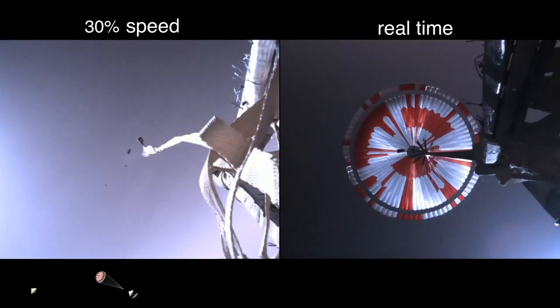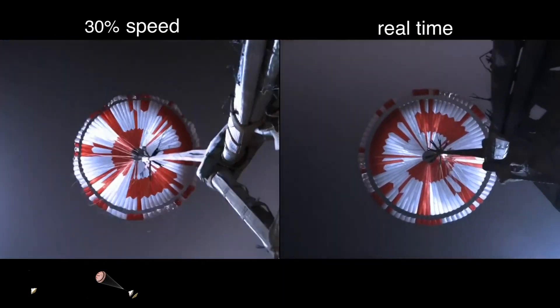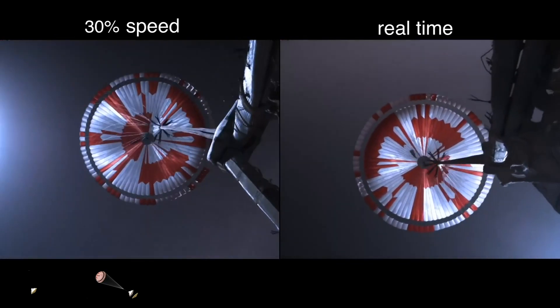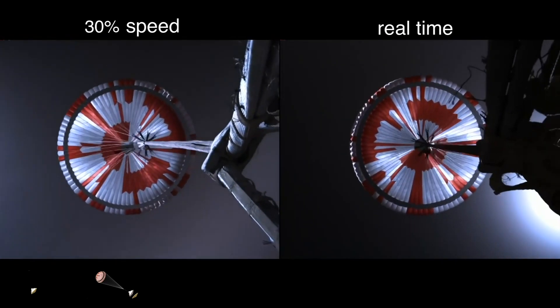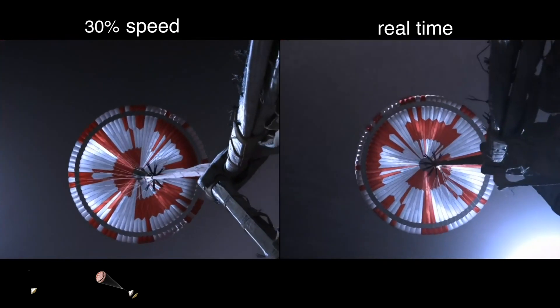The traffic indicates chute deployed. The navigation has confirmed that the parachute has deployed, and we are seeing significant deceleration in the velocity. Our current velocity is 440 meters per second at an altitude of about 12 kilometers from the surface of Mars.